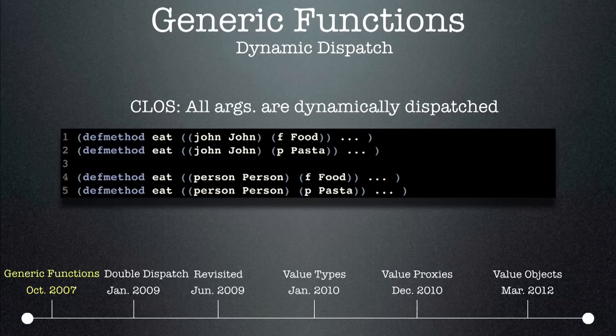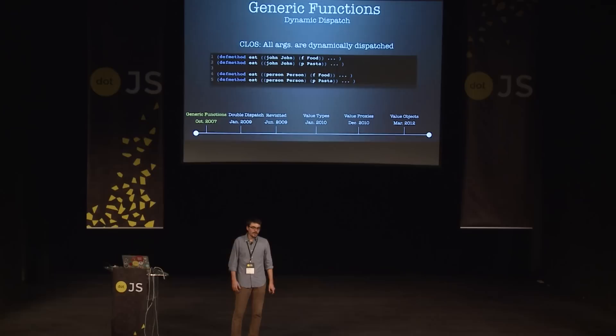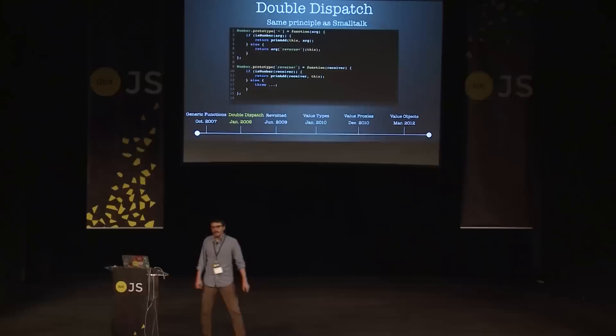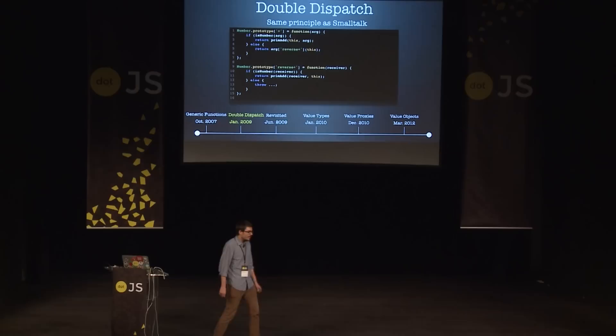Imagine the power of having methods where all dispatch is done at runtime. However, there were issues: incredibly complex inheritance rules to resolve dispatch ambiguities, and other arguments on the ES Discuss mailing list that led people to abandon this idea. In January 2009, Mark S. Miller proposed another approach, similar to Smalltalk's style of defining operator overloading.